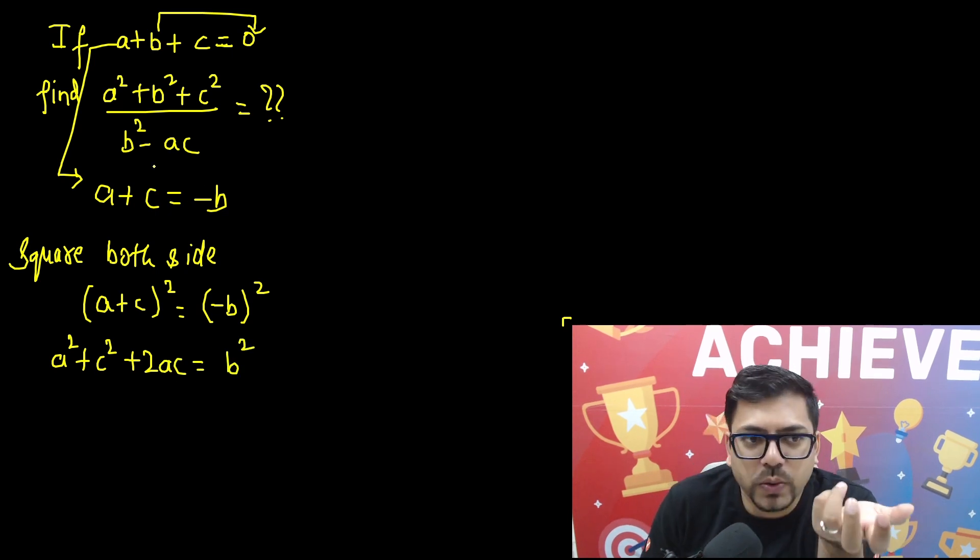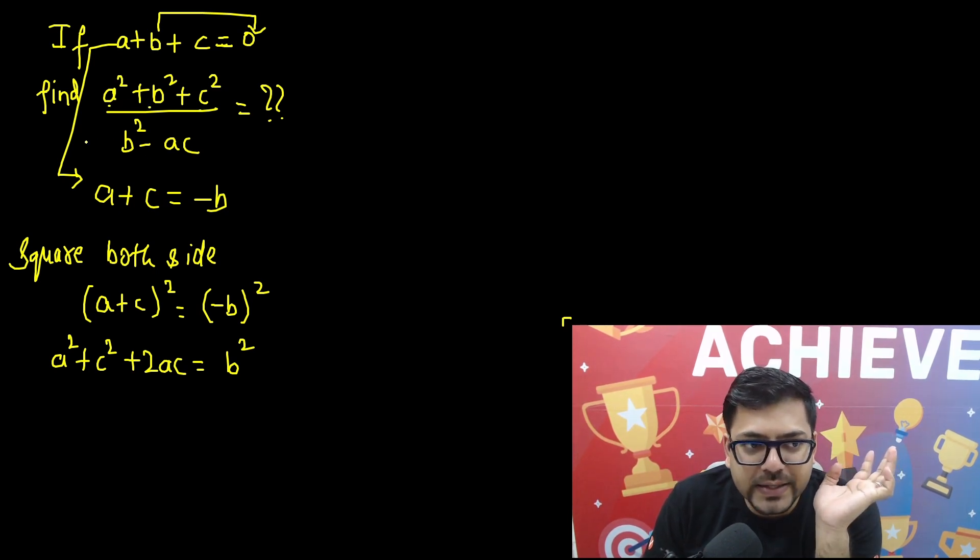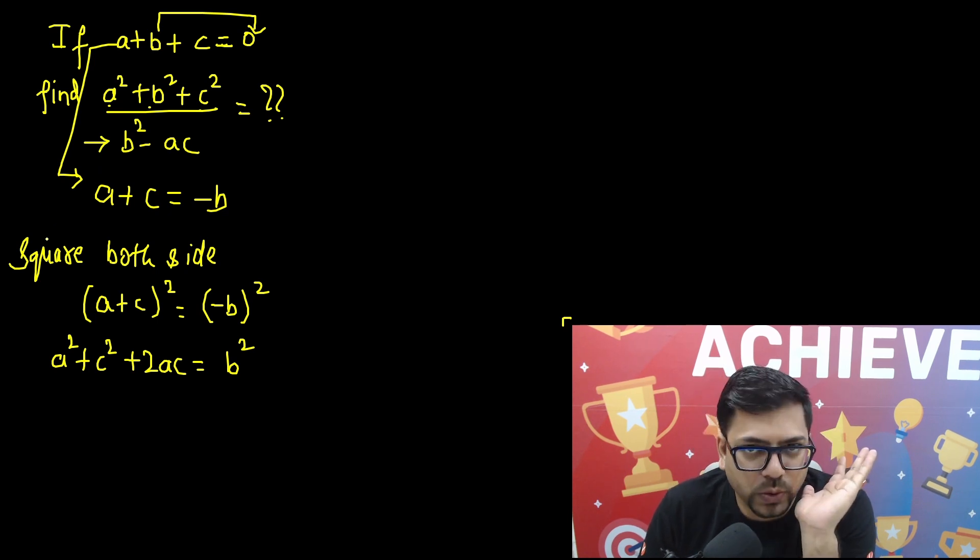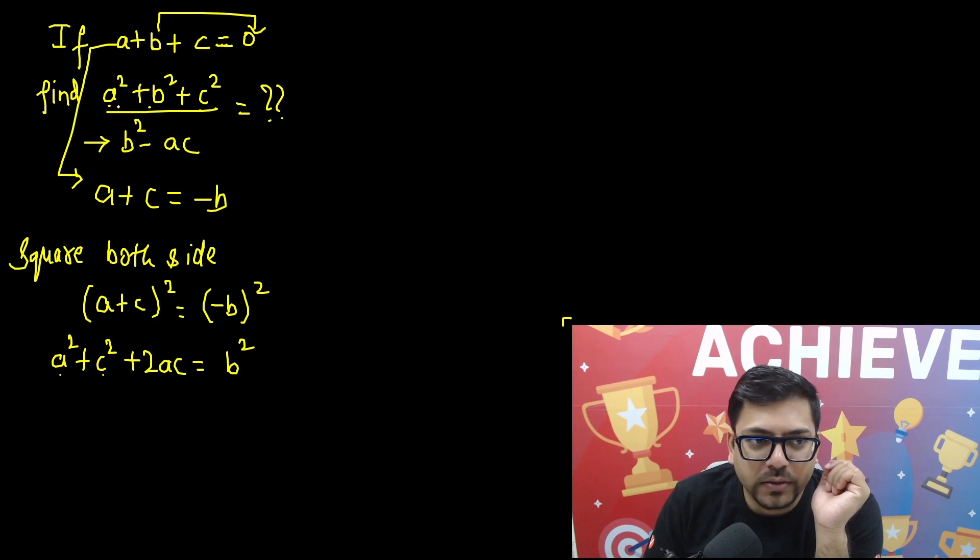Now why are we doing all this? Because we know that we need a square, b square, c square and at the same time we know that in the denominator we need b square minus ac. Now we have got a square and c square in the numerator but b square is still missing.